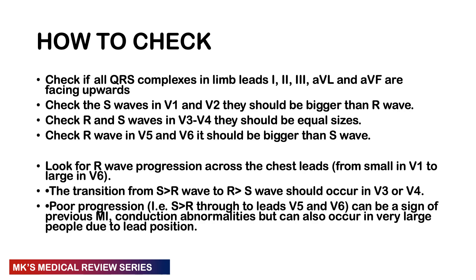Looking at the R wave progression across the chest leads: the R wave is smallest in V1 and largest in V6. There is a transition zone where the S wave goes from being bigger than the R wave to the R wave being bigger than the S wave, and this occurs around V3 and V4 where they are roughly the same size. Poor R wave progression can be a sign of a previous MI, conduction abnormalities, or in very large patients where the leads may be placed in the wrong position.